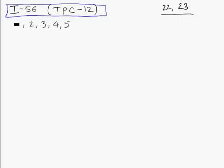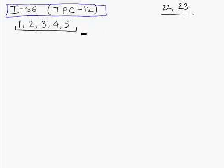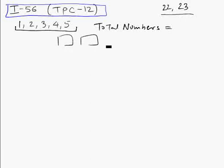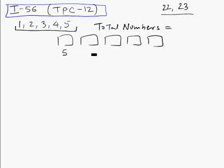In this question, we are supposed to find the sum of all the five-digit numbers that we can form with the help of these five digits. First, let's find the total numbers that can be formed. Using the box method, we can fill the first box in five ways, because it can be filled by any of the five digits.